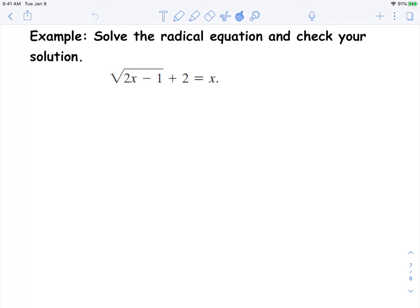We're going to solve a radical equation and then check the solution. So what you want to first do is isolate the square root. So we have to subtract 2 from both sides so that this 2 is off to the right.